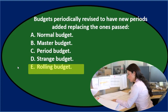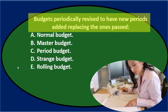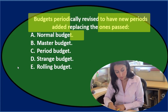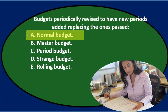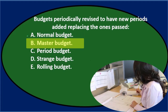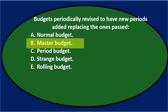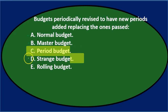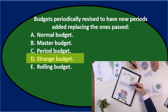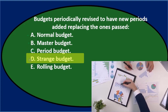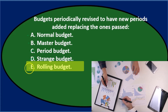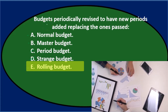Let's go through this using the process of elimination. Budgets periodically revised to have new periods added, replacing the ones past. A, Normal budget — that doesn't seem totally fitting, but I'll keep it for now. B, Master budget — that sounds like a familiar term, so I'll keep it. C, Period budget — that almost seems made up, so I'll cross it out. D, Strange budget — that sounds a little unusual; I doubt that's the real term. And E, Rolling budget — if I think about what's happening, that sounds kind of like what it would be. Sounds rolling-ish.